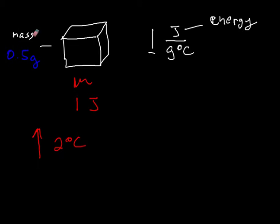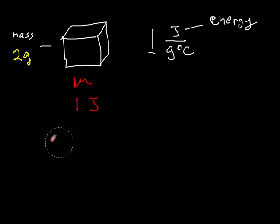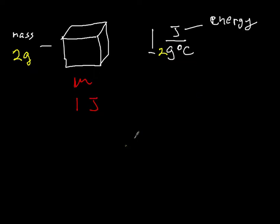What if instead of one gram, this object weighed two grams? I still give it one joule of energy. There are two grams of it, so it's going to go up by half a degree Celsius.